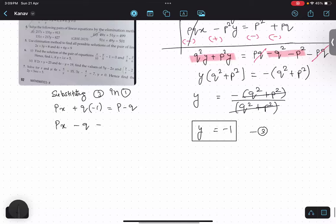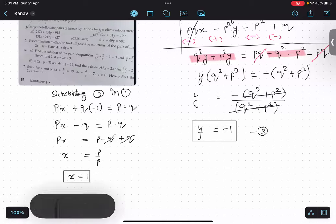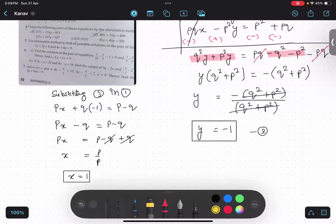px minus q equals to p minus q. px equals to p minus q plus q. q, q cancel. And I will get x equals to p upon p. x equals to 1.